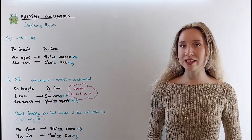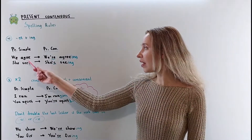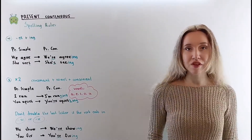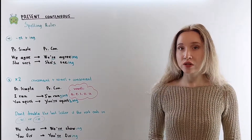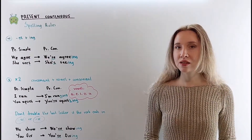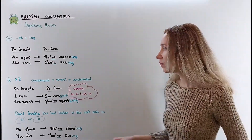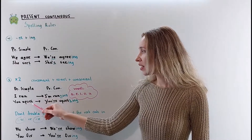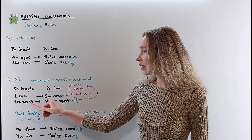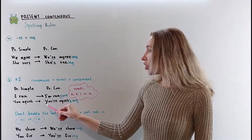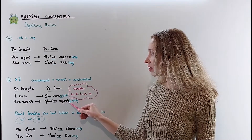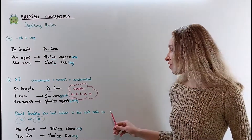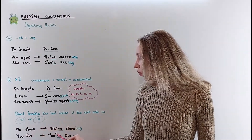When the verb ends in double E, add ING. I agree → we're agreeing. She sees → she's seeing. I didn't remove anything. If the verb has two or more syllables and ends in consonant-vowel-consonant, double the last letter if the last syllable is stressed. For example: I run → I'm running. You're upset — the last syllable is stressed, ends in consonant-vowel-consonant, so double again: you're upsetting. But don't double if the last letter is W or X: we show → we're showing.